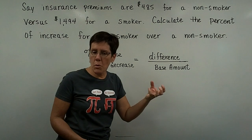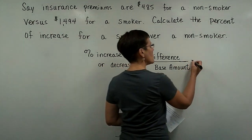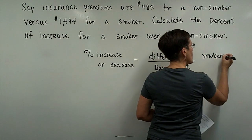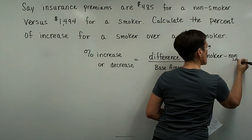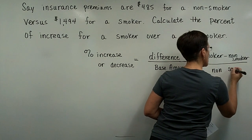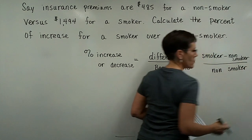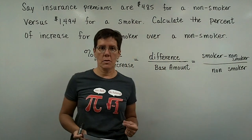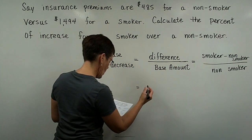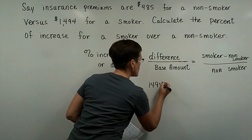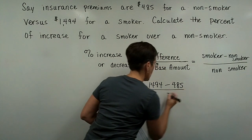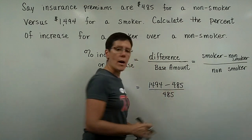So we're comparing the smoker to the non-smoker. We take and subtract the rate for a smoker versus a non-smoker, and divide that by the non-smoker rate, because we're saying that a non-smoker is the better scenario. So let's go ahead and find that difference. We have $1,494 for the smoker minus $485 for the non-smoker, and we need to find that difference and divide by that base rate.